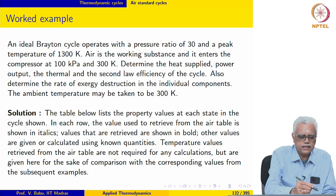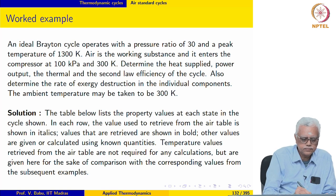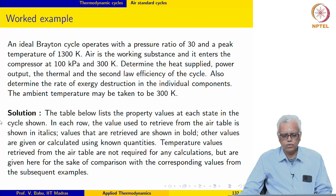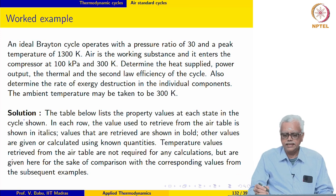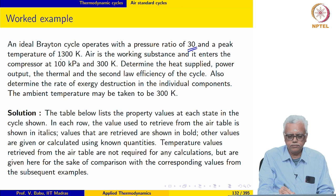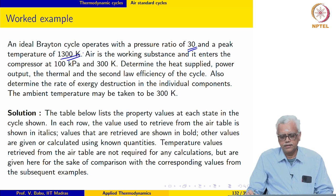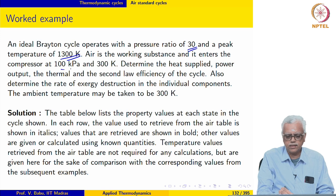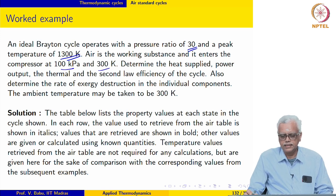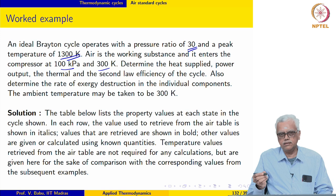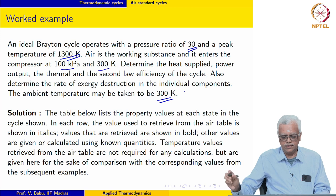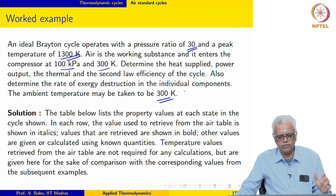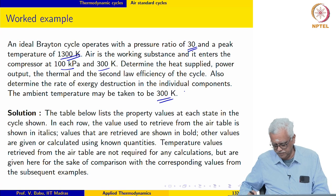Now let us go to the worked example. We have an ideal Brayton cycle, which means the isentropic efficiency of the components is 100 percent. It operates with a pressure ratio of 30 and a peak temperature of 1300 Kelvin. Air is the working substance and it enters the compressor at 100 kPa and 300 Kelvin. We are asked to calculate heat supplied, power output, thermal efficiency, second law efficiency, and the rate of exergy destruction in the components. Ambient temperature is given to be 300 Kelvin.